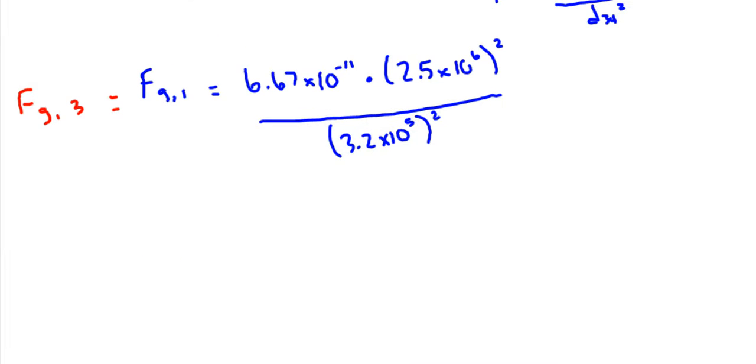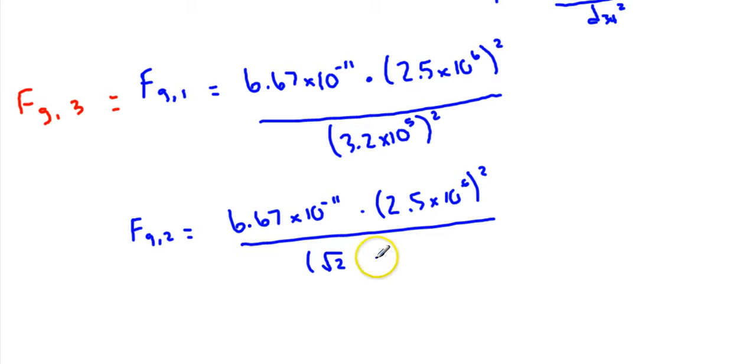And so then the other one we actually have to calculate in addition is F_g2, which is the same numerator, 6.67 times 10 to the negative 11th times 2.5 times 10 to the 6th squared. But now we are going to multiply by the square root of 2 on the bottom. So root 2 times 3.2 times 10 to the 5th squared. And when you punch these into your calculator, being very cautious and making sure that you are not messing up your exponents because of parentheses, we end up getting this value as 4.07 times 10 to the negative 9th newtons. And this one ends up being 2.05 times 10 to the negative 9th newtons.